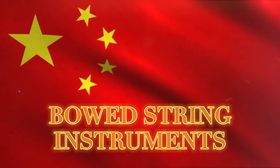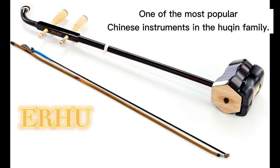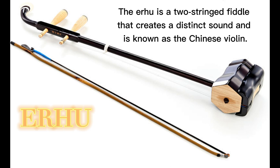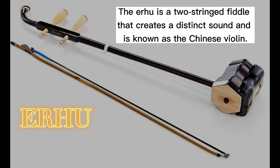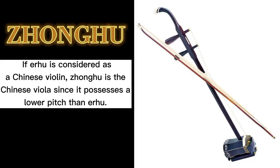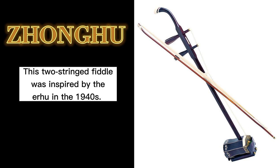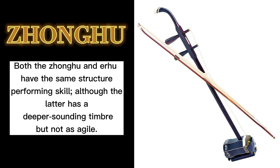Moving to bowed stringed instruments: the Erhu, one of the most popular Chinese instruments in the huqin family, is a two-string fiddle that creates a distinct sound and is known as the Chinese violin. The Jinghu is considered the Chinese viola, since it possesses a lower pitch than the Erhu. This two-string fiddle was inspired by the Erhu in the 1940s. Both have the same structure and performing skill, although the Jinghu has a deeper sounding timbre but is not as agile.